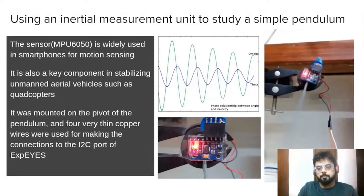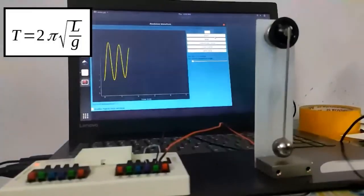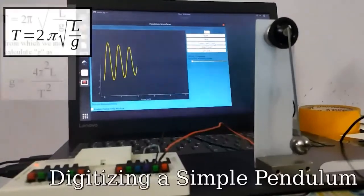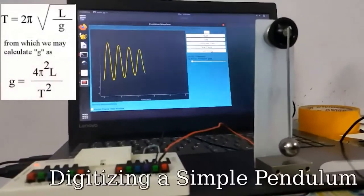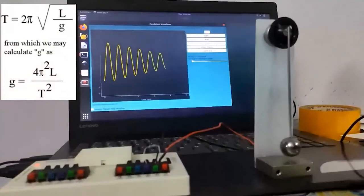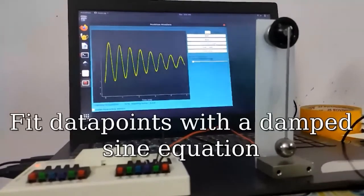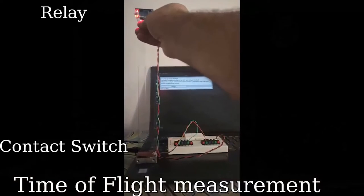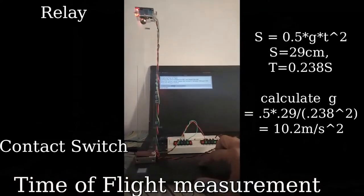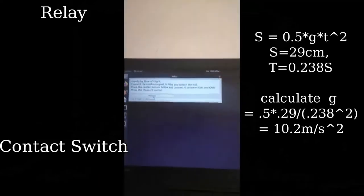The value of acceleration due to gravity can be quickly derived from mechanics experiments. The time period of the simple pendulum can be measured using a DC motor shaft acting as a dynamo, or for a more direct approach, the time of flight of a metal ball can be measured by releasing it from an electromagnet and stopping a timer when it hits a contact switch.